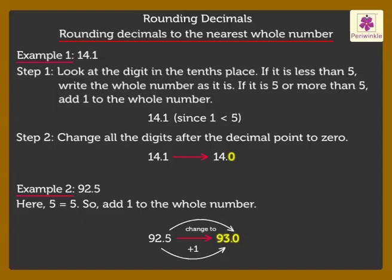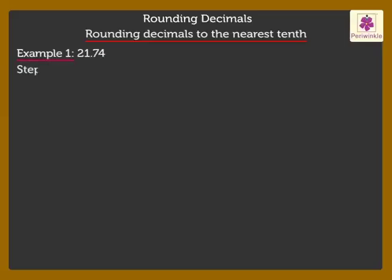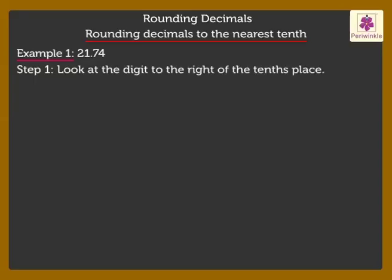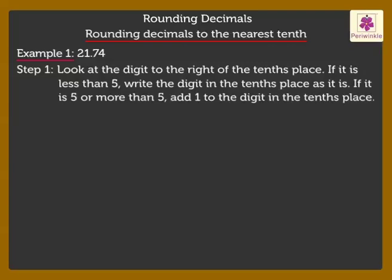Now, let's see rounding decimals to the nearest tenth. Look at the given number. Step 1: Look at the digit to the right of the tenths place. If it is less than 5, write the digit in the tenths place as it is. If it is 5 or more than 5, add 1 to the digit in the tenths place.